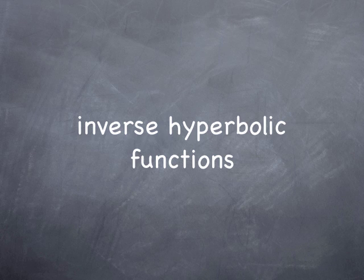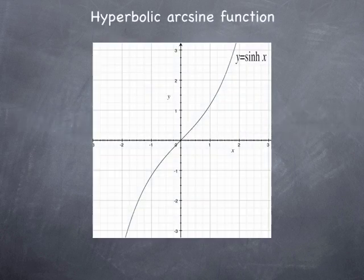Now that we have defined hyperbolic functions and seen their basic properties, let's look at the inverse hyperbolic functions. Starting with the hyperbolic sine, which was defined as (e^x − e^(−x))/2. Here is a graph from the previous video. This is a one-to-one function on the real line whose domain and range are the entire real line, and therefore we can define its inverse function.